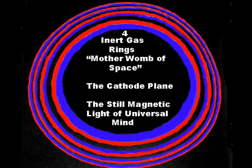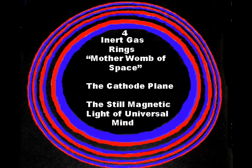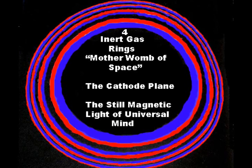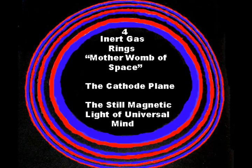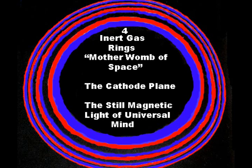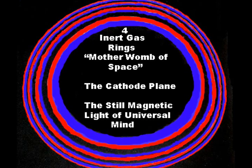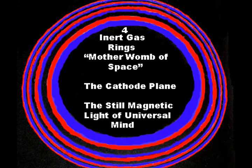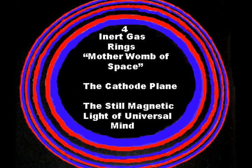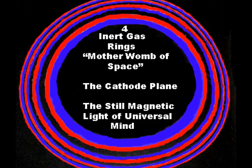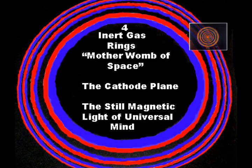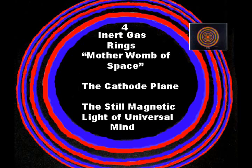The opposite of the fusion image Russell painted would be a fission image like this, with a hole in the center for cathode female preponderance. The anode condition of the inert gas rings would be superimposed over these rings with male and female color spectrums in the inverse of the previous fusion image.